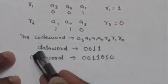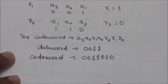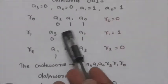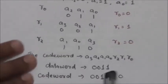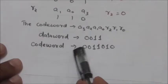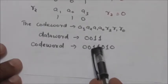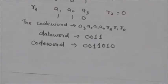So the code word is a3, a2, a1, a0, r2, r1, r0. The data word is 0011 and the check bits r2, r1, r0 are 0, 1, 0. So the code word will be 0011010. This is the way code words are created in this Hamming code.